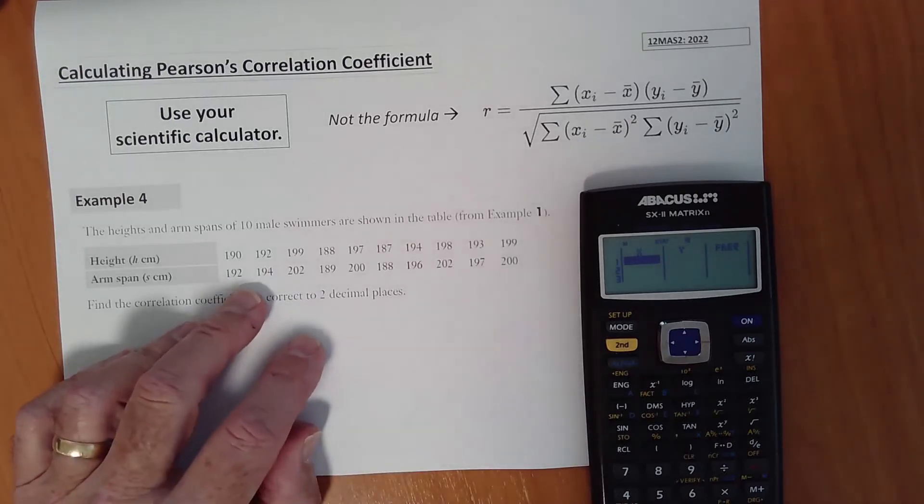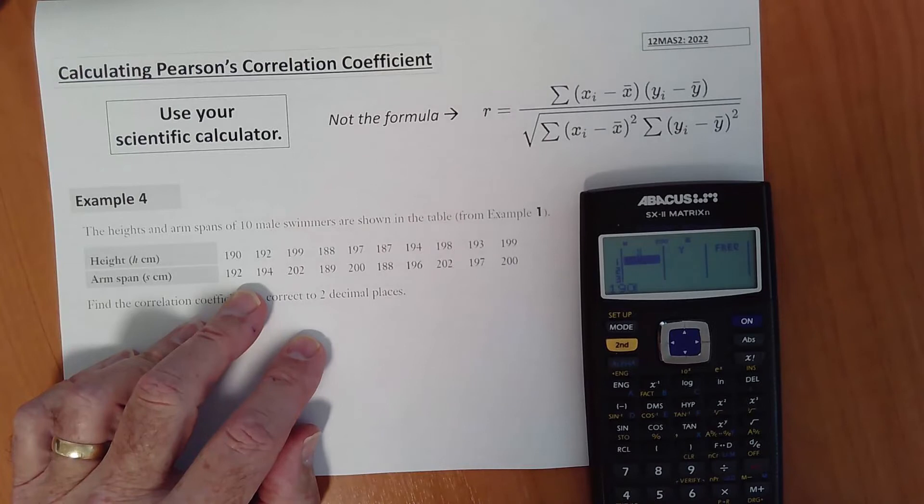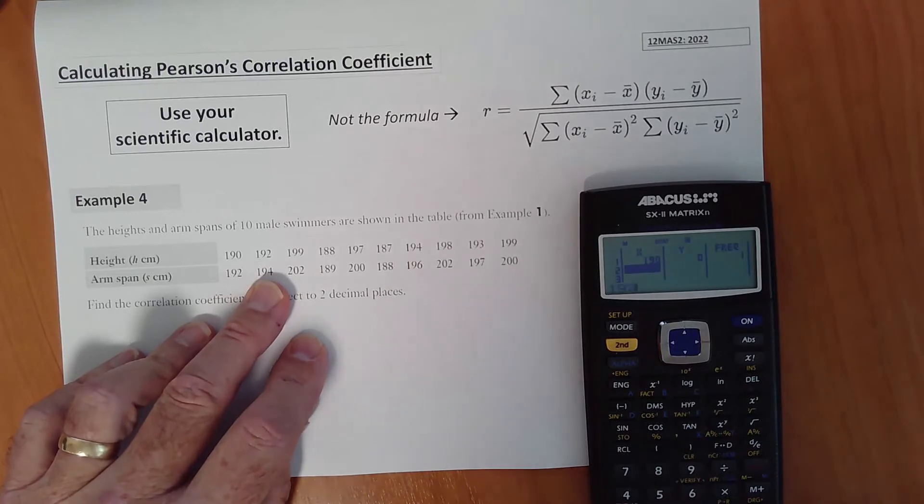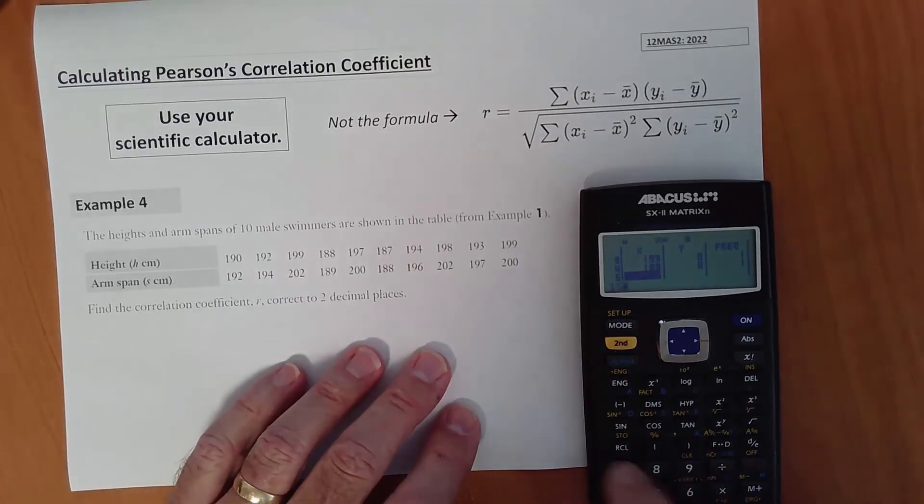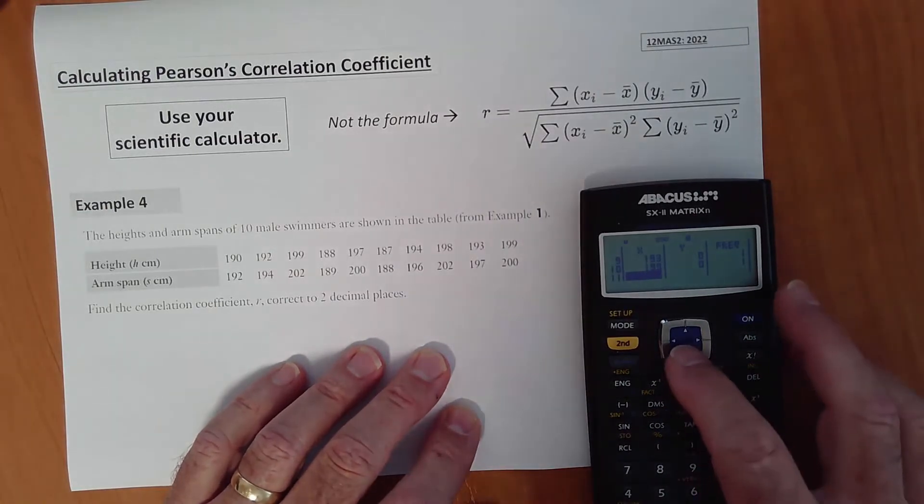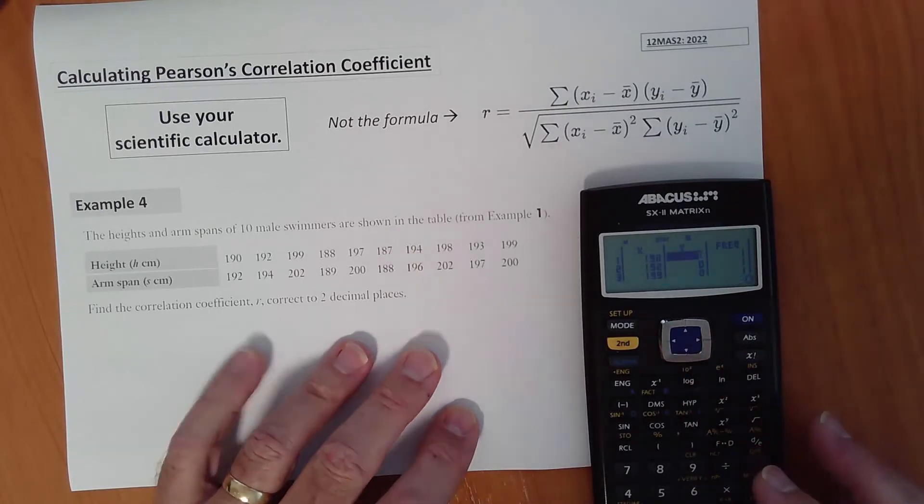Entering the data. The easiest way I find is to go down the X values and then go down the Y values. So here we go. 190, press equals, in it goes. Then we'll come back and do the Y values later. 192. Using our arrow keys, go down, which goes back to the top of the list, across to the Y values and here we go.